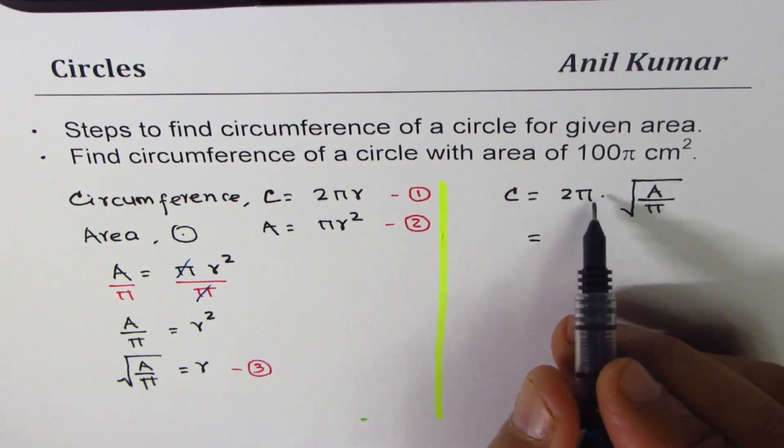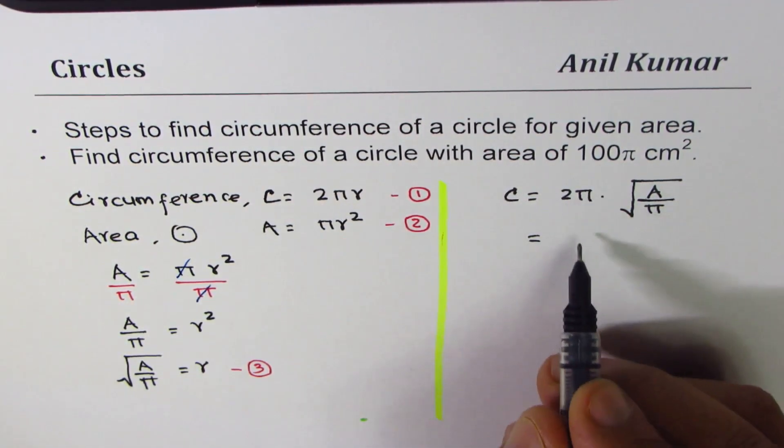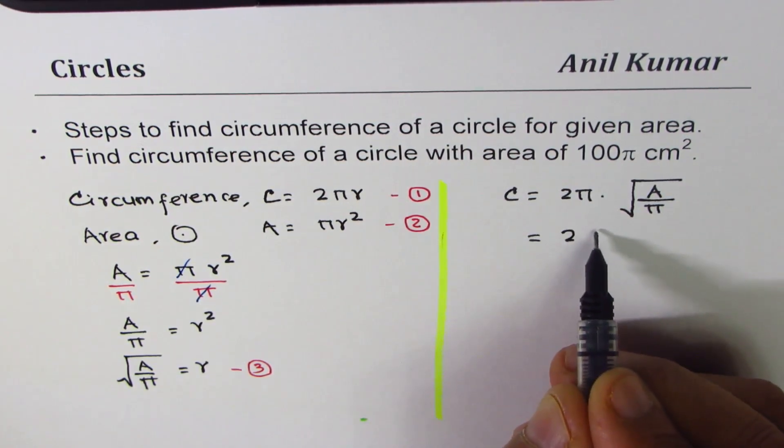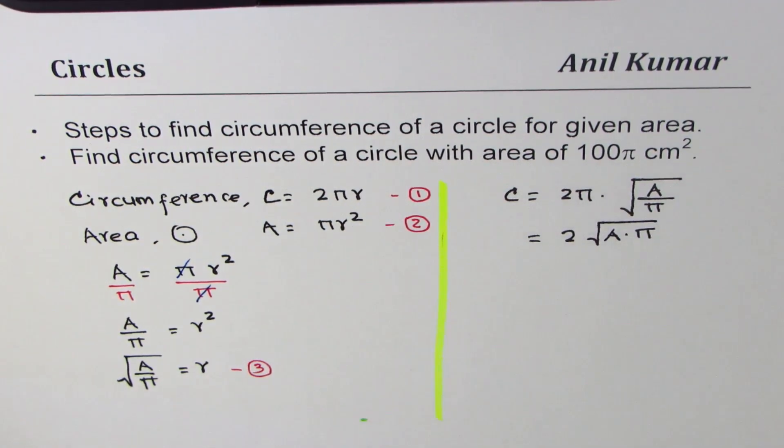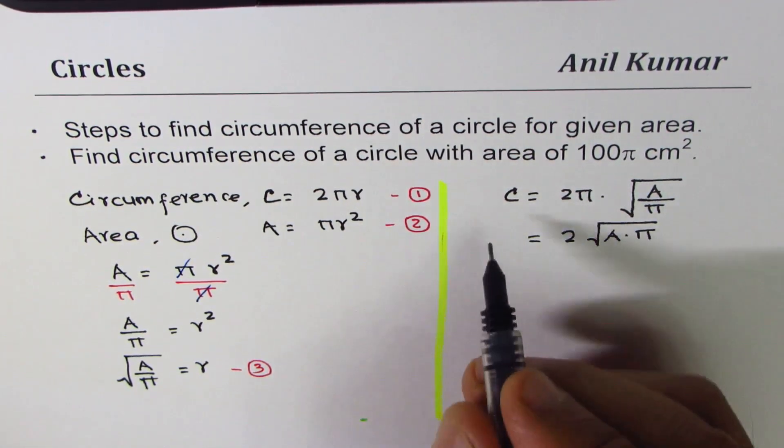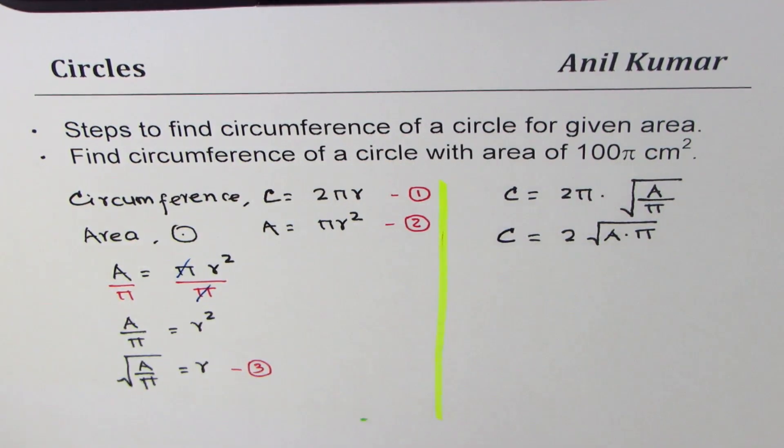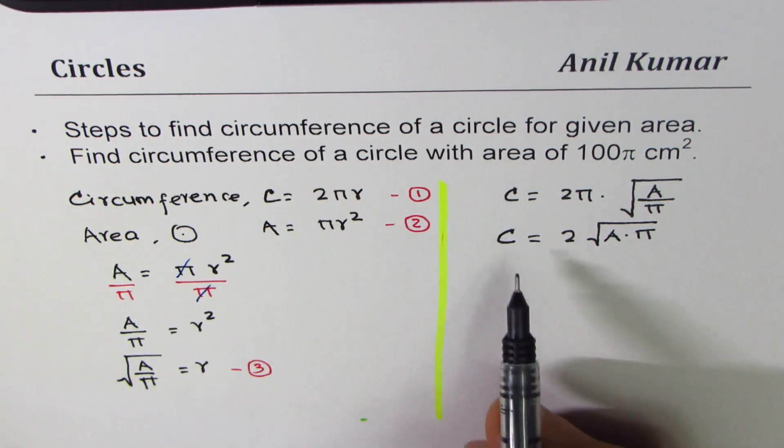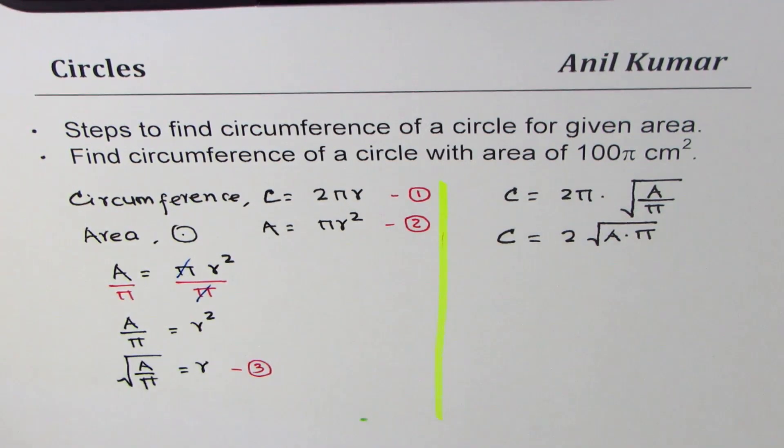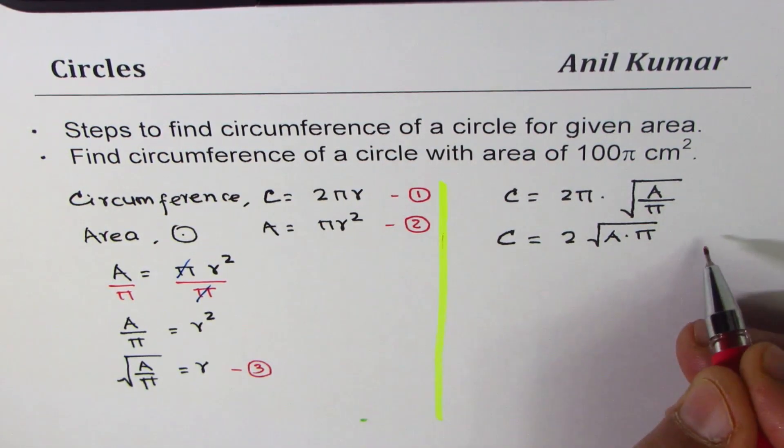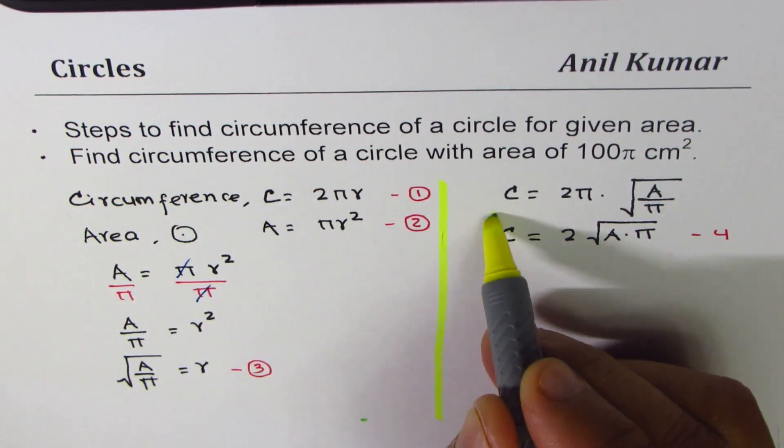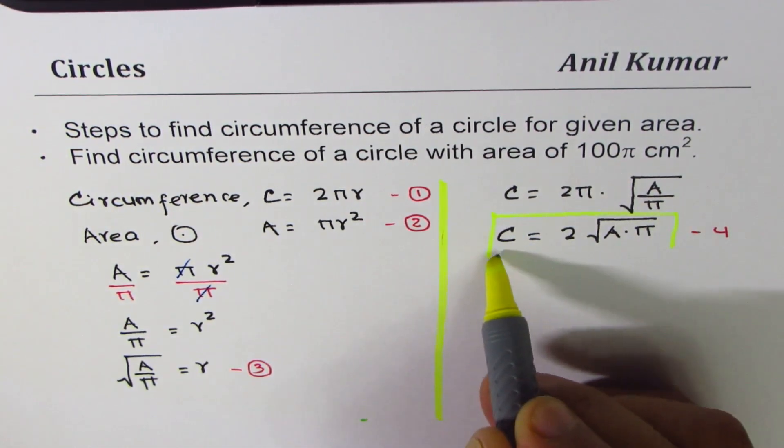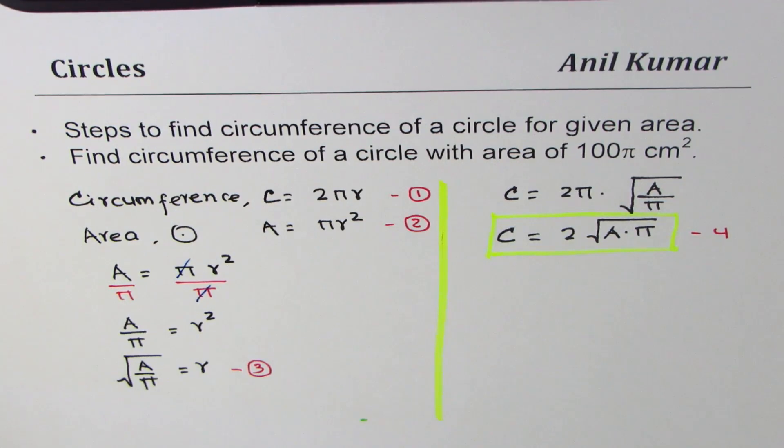We can simplify this. Think about π divided by π which is square root of π. So we get square root of A times π. So that becomes an expression which can be utilized to find circumference when area is given to us, right? So we could treat this as a new formula. We'll call this as our equation number 4. So let me highlight this equation which we are going to use to find circumference for the given area, right?